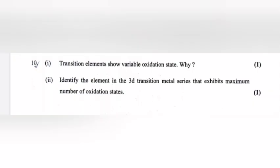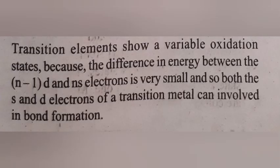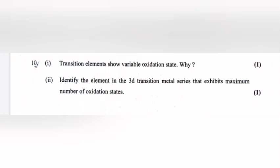Question 10: Transition elements show variable oxidation state because the difference in energy between (n-1)d and ns electrons is very small, and so both the s and d electrons of transition metal can be involved in bond formation. Identify the elements in the 3d transition metal series that exhibit maximum number of oxidation states. Answer: Manganese.